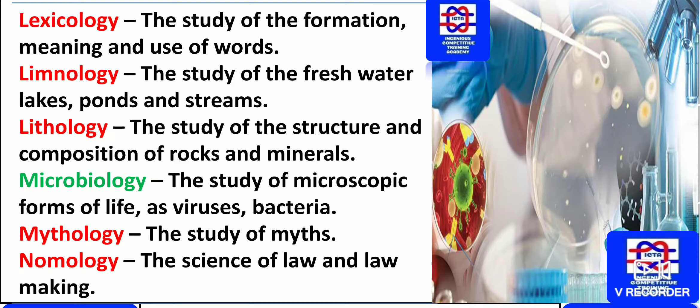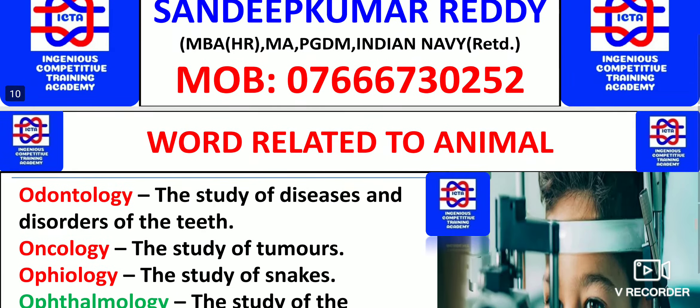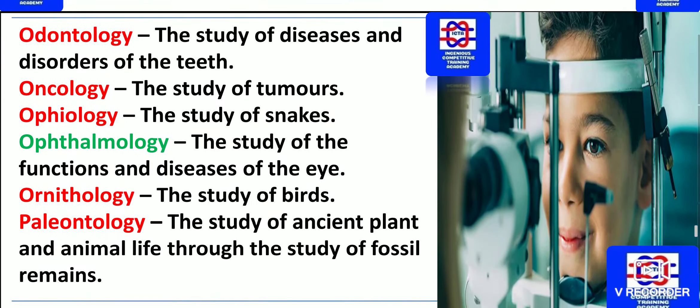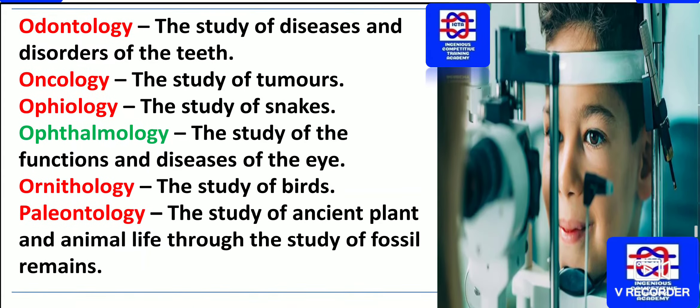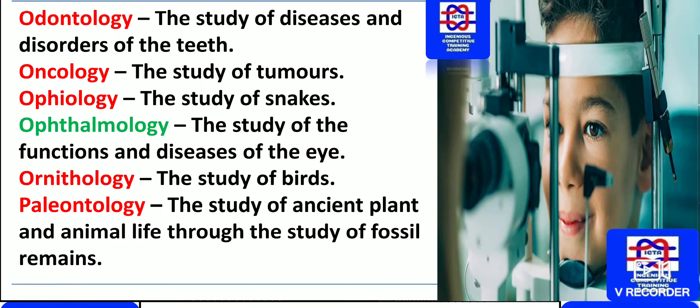Nomology is the science of law and law making. Next we have odontology — the study of diseases and disorders of the teeth. The study of tumors is oncology.